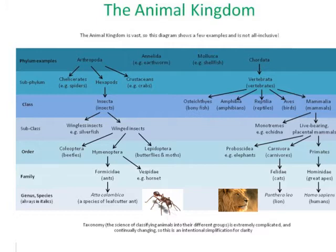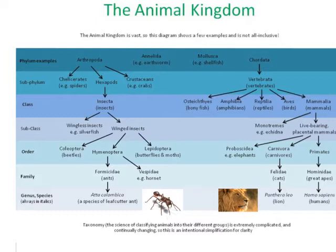If we look at the vertebrates, which are a subphylum of the phylum chordates, we divide that into different classes — organisms we're probably very familiar with: fish, amphibians, reptiles, birds, and mammals. If we just look at the mammal class and its subclasses, we have monotremes and live-bearing placental mammals, and those are divided into several orders — elephants, carnivores, and primates as just a few examples. Within that, the carnivores are divided into different families.